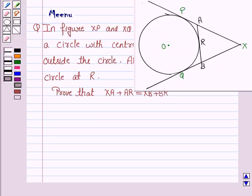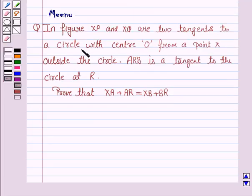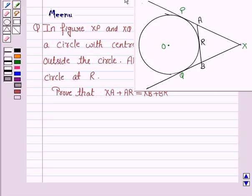XP and XQ are two tangents to a circle with center O from point X outside the circle. ARB is a tangent to the circle at R. Prove that XA plus AR is equal to XB plus BR.